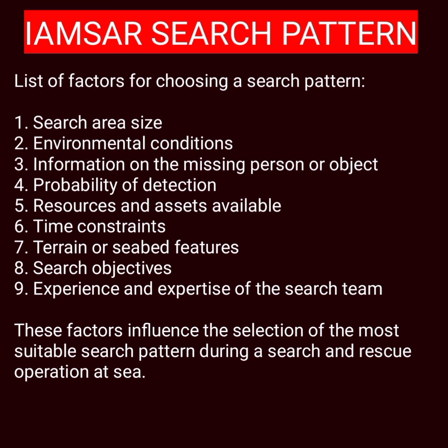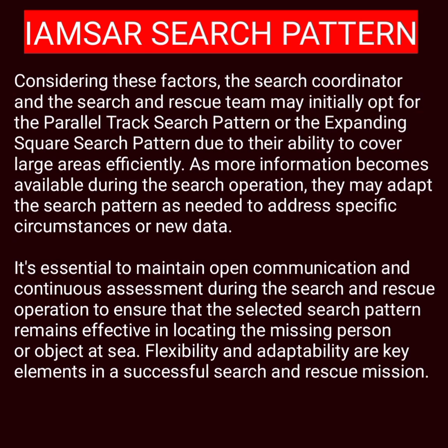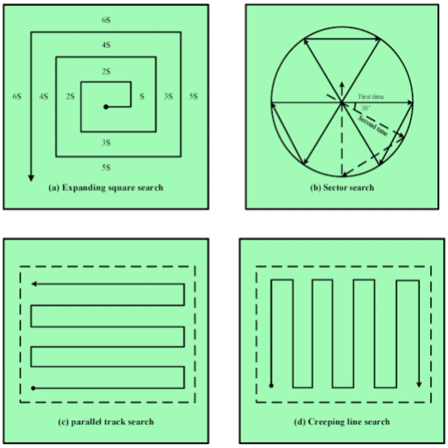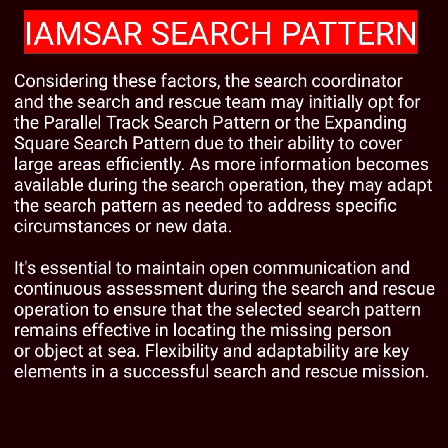Finally, the eighth and ninth factors — search objectives and experience and expertise — are self-explanatory. The experience and expertise of the search and rescue team and coordinators are vital in making informed decisions about the most suitable search pattern. Considering these factors, the search coordinator and team may initially opt for the parallel track search pattern or expanding square search pattern due to their ability to cover large areas efficiently. As more information becomes available during the search operation, they may adapt the search patterns as needed to address specific circumstances or new data.